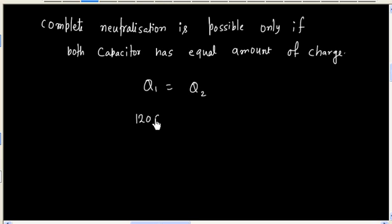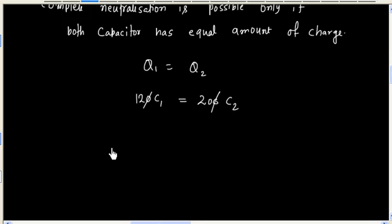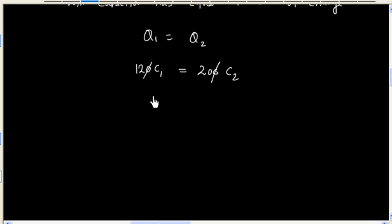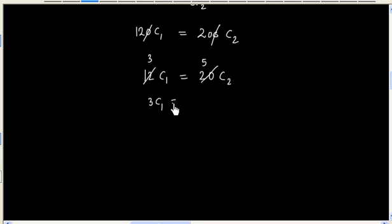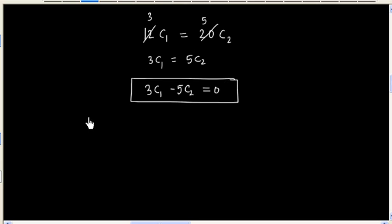That is 120 into C1 equals 200 into C2, or we can further divide. So we will have 3C1 equals 5C2, or 3C1 minus 5C2 equals zero. So this is the condition.